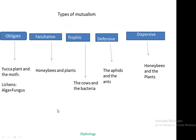These mutualistic interactions, on the basis of their purpose, may be of five types: obligatory mutualism, facultative mutualism, trophic mutualism, defensive mutualism, and dispersive mutualism.